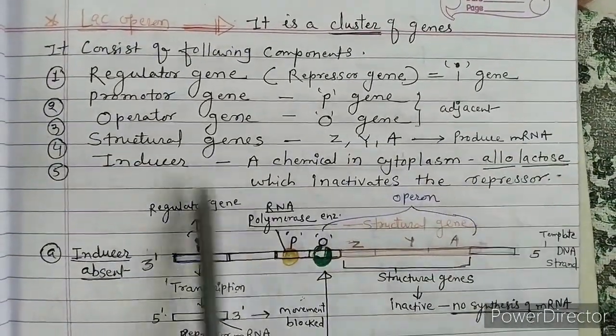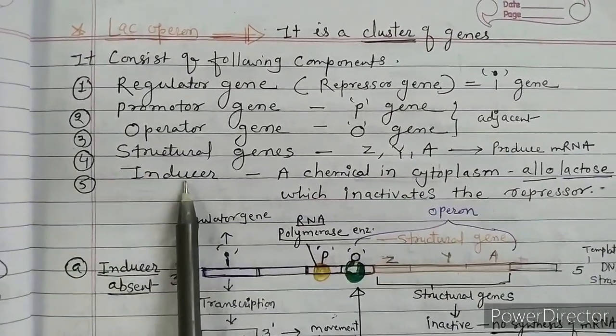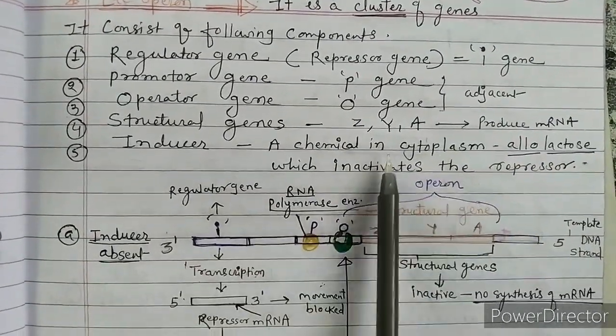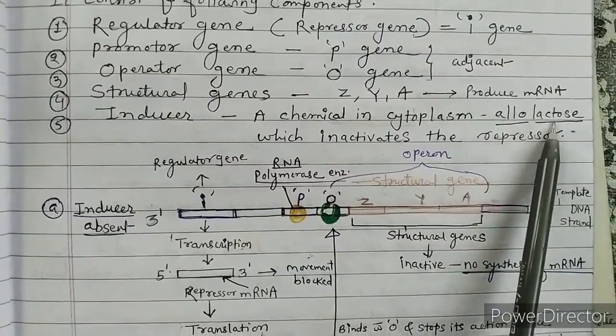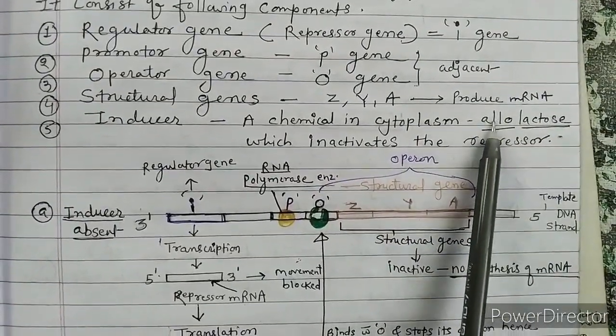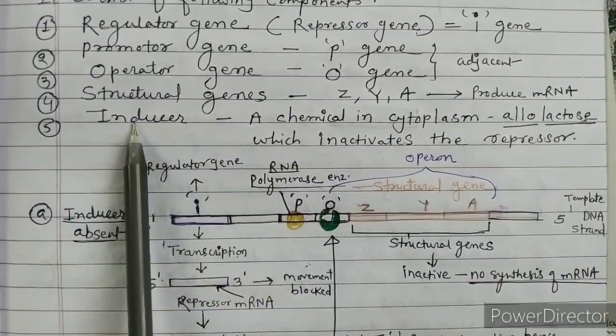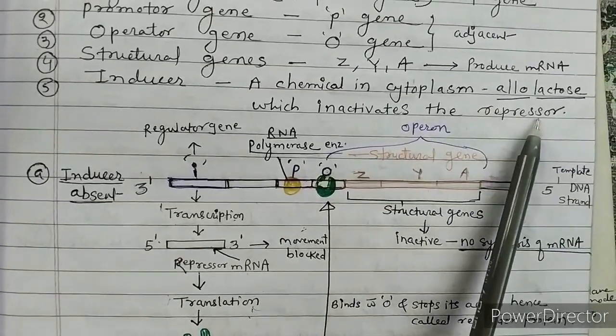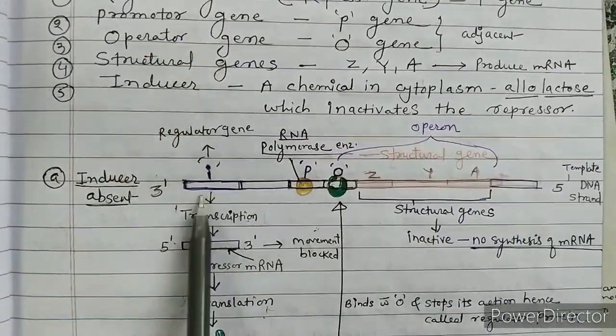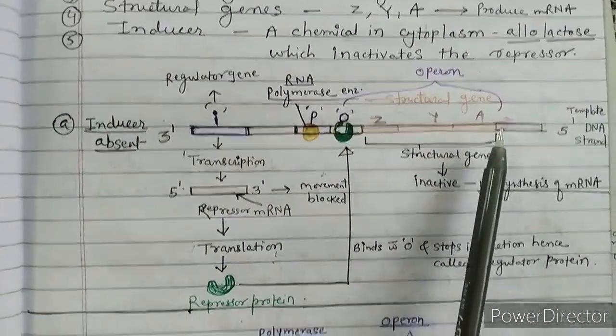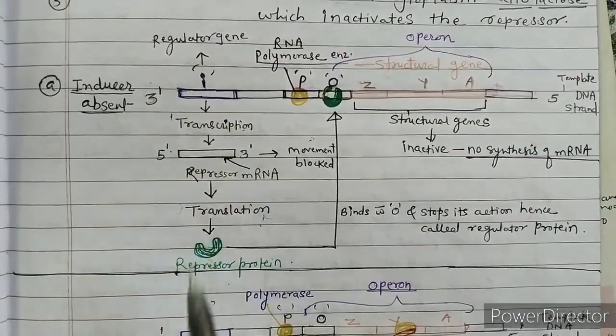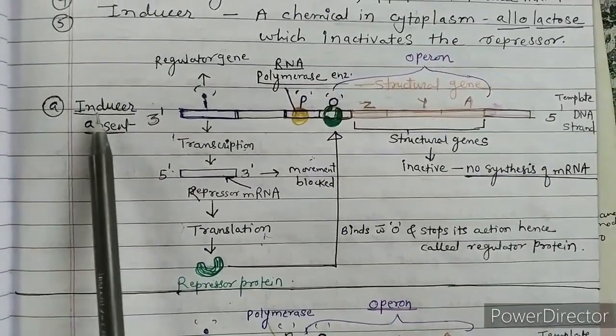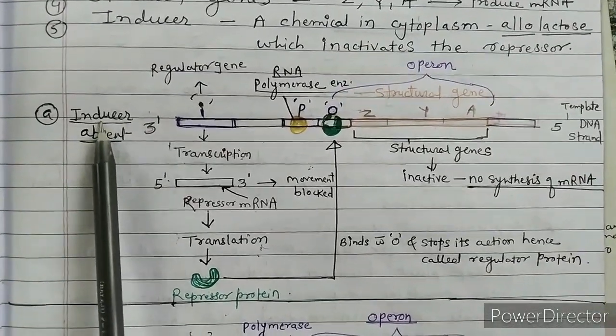Fifth is the inducer. Actually it is not a gene, it is a chemical present in the cytoplasm of the E. coli bacteria. This chemical is called allo lactose. Allo lactose works as an inducer. Its function is that allo lactose inactivates the repressor protein.